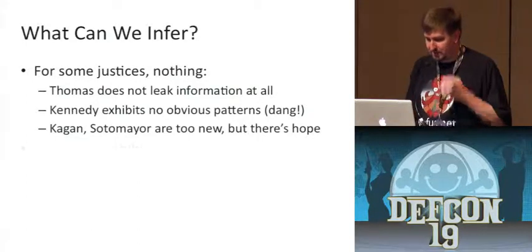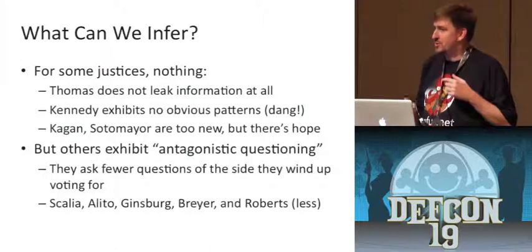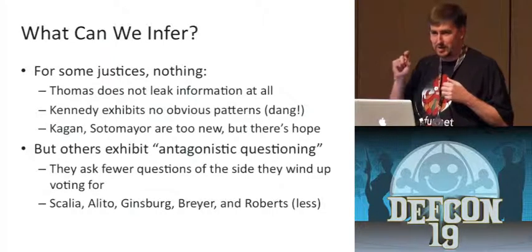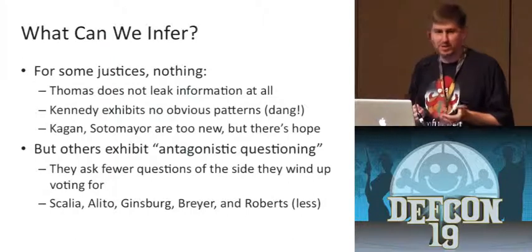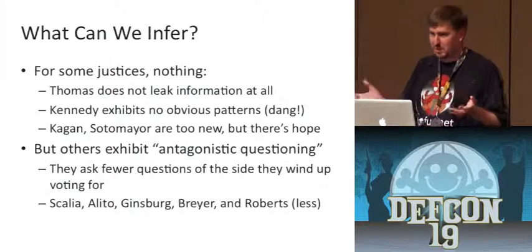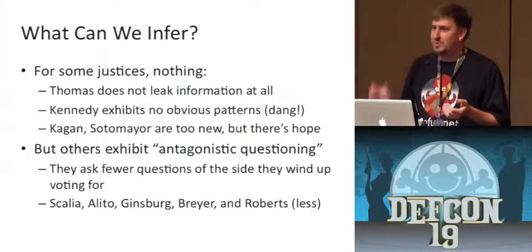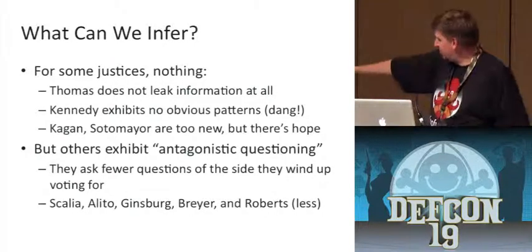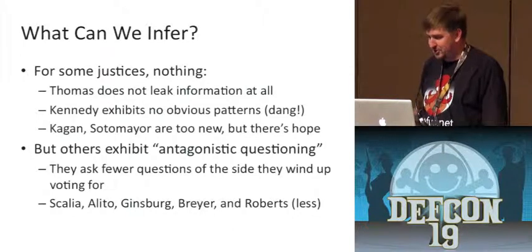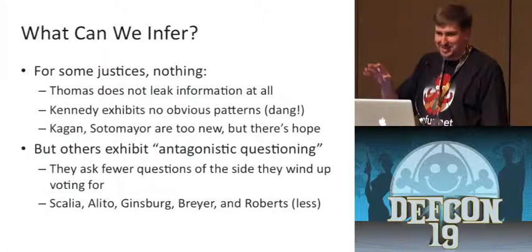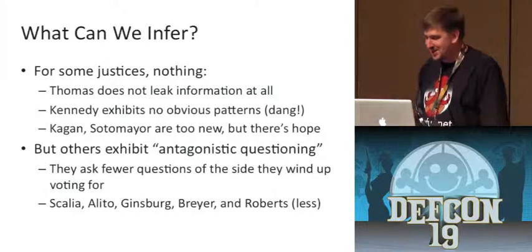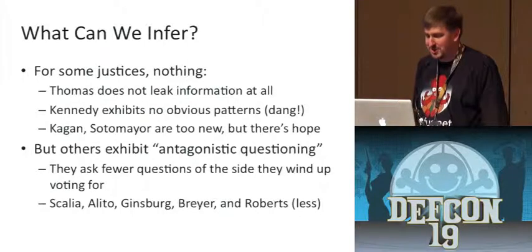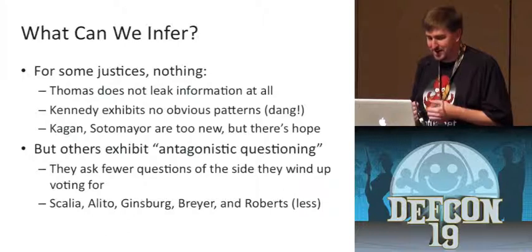But for the remaining five justices, they exhibit what I would call antagonistic questioning. If you count up the questions they ask, whatever side they're going to vote for, that's the side they ask fewer questions of. This makes sense: if someone is espousing a position you disagree with, you might tend to get into it with them; if someone is saying stuff you totally agree with, you might let them off the hook. In order of strength of correlation, Justice Scalia is sort of pegging the meter — if he doesn't agree with you, he's going to be on your case at oral argument. Justice Roberts raises the needle somewhat but isn't a strongly predictive questioner.